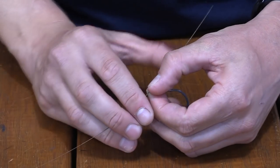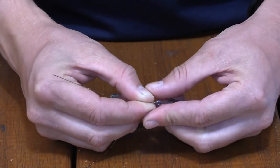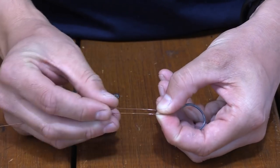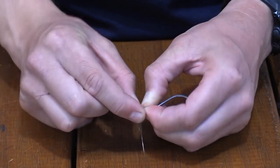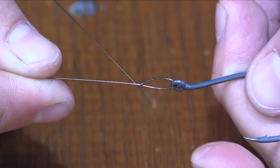So we then repeat the same process, holding the hook, pulling the tagline and the main line parallel to one another and then cross it over and pinch so it ends up like that for your first twist.